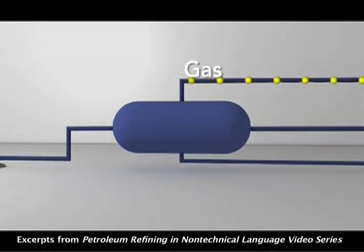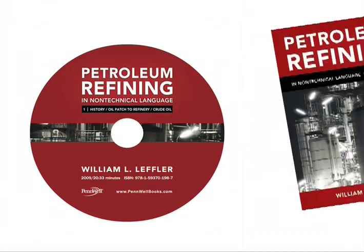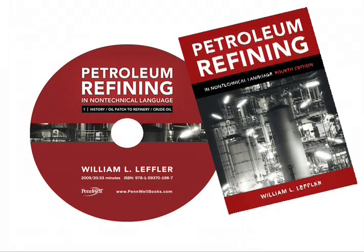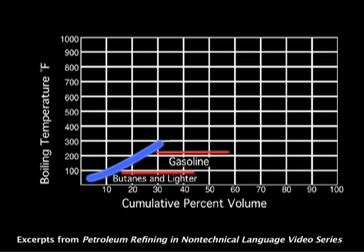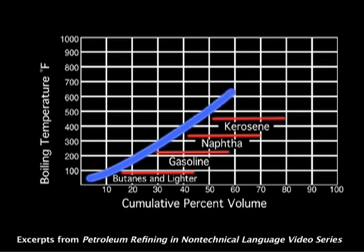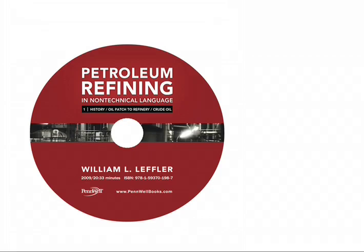Natural gas is drawn off the top of the separator and the crude oil out the side. Almost every reservoir has water vapor entrained in the oil and gas. To further specify the character of crude oil, refiners have found it useful to lump certain compounds into groups called fractions. Fractions, or cuts, are the generic names for all compounds that boil between two given temperatures, or cut points. What you see here is a distillation curve and its fractions.